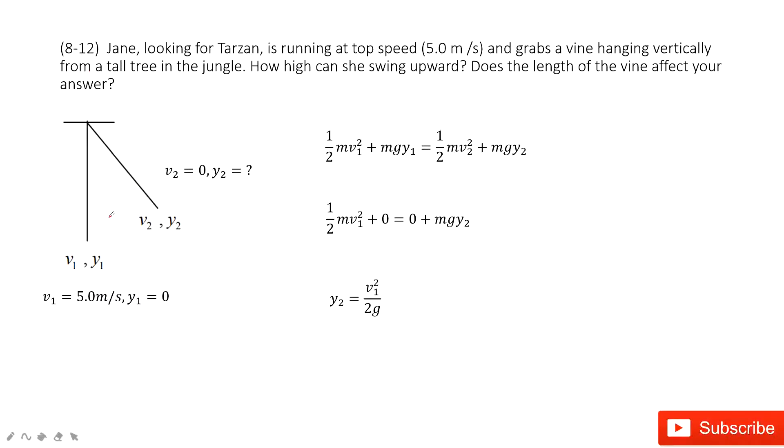Chapter 8 is about the conservation of energy. For this model, we can see we have two states. Initial state, the person is there, the vine is there. At the final state, the vine is there.